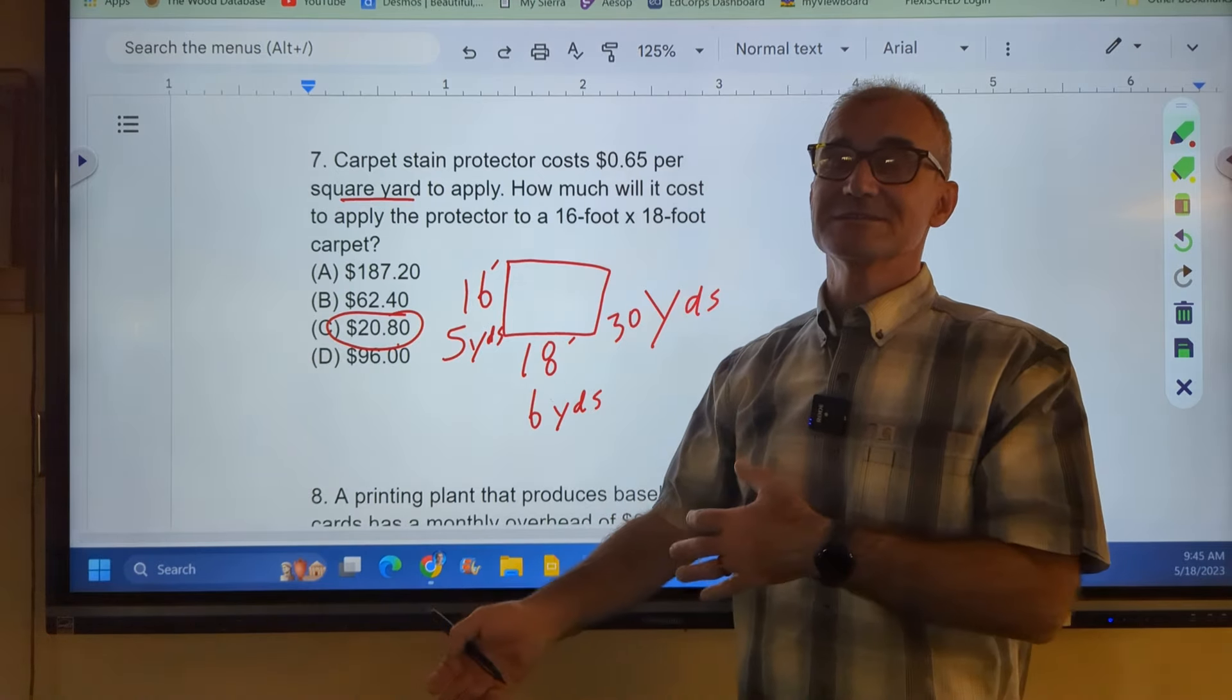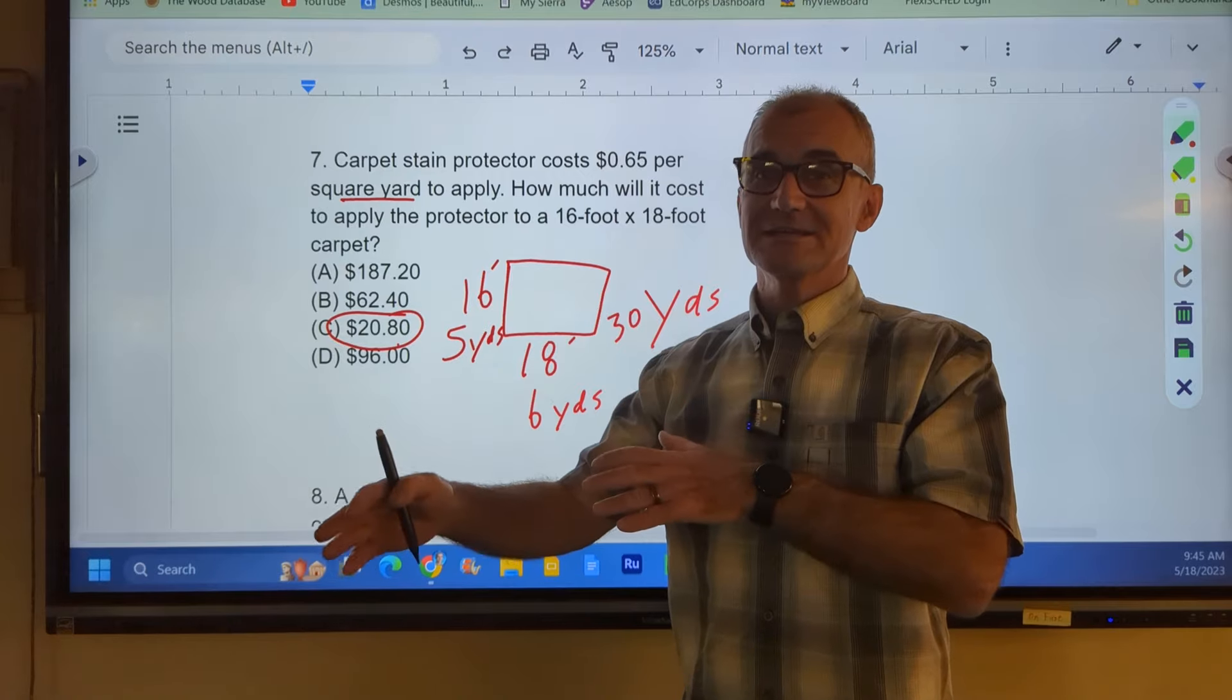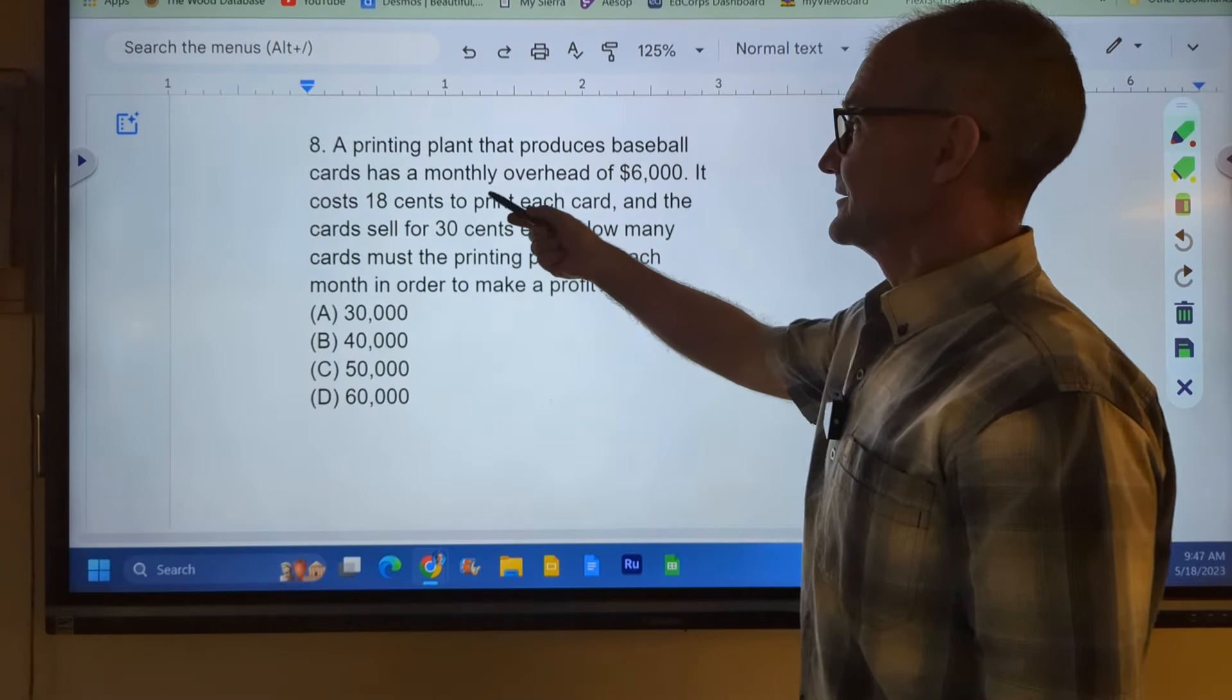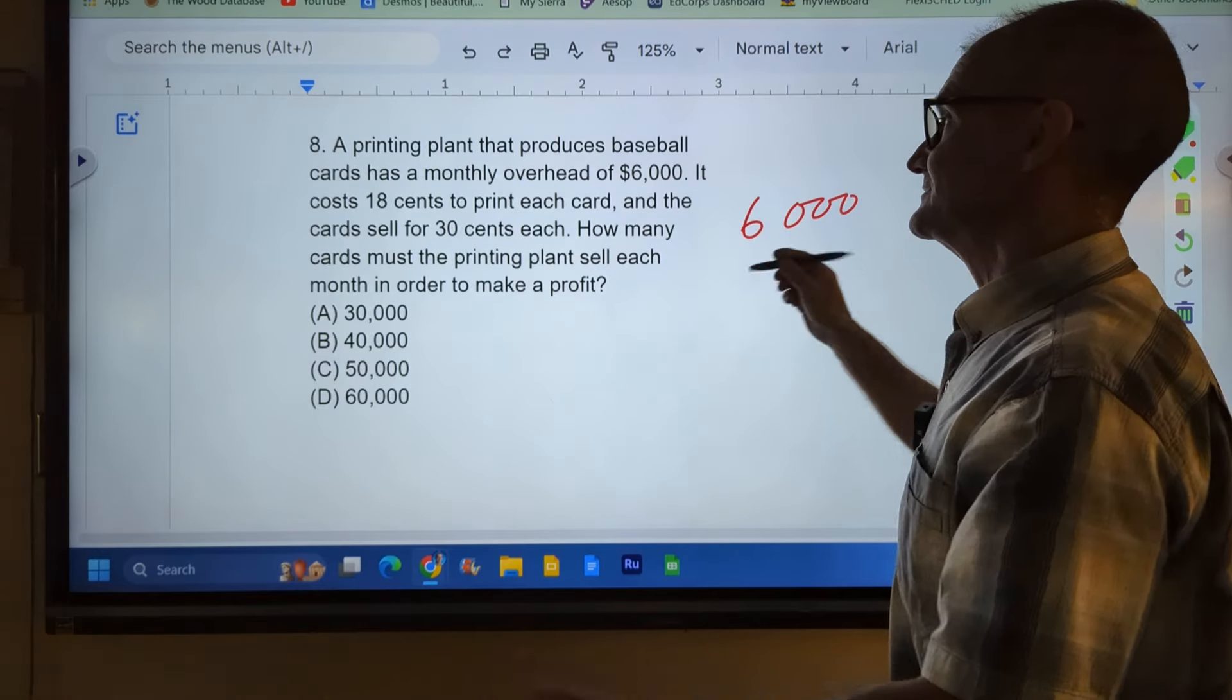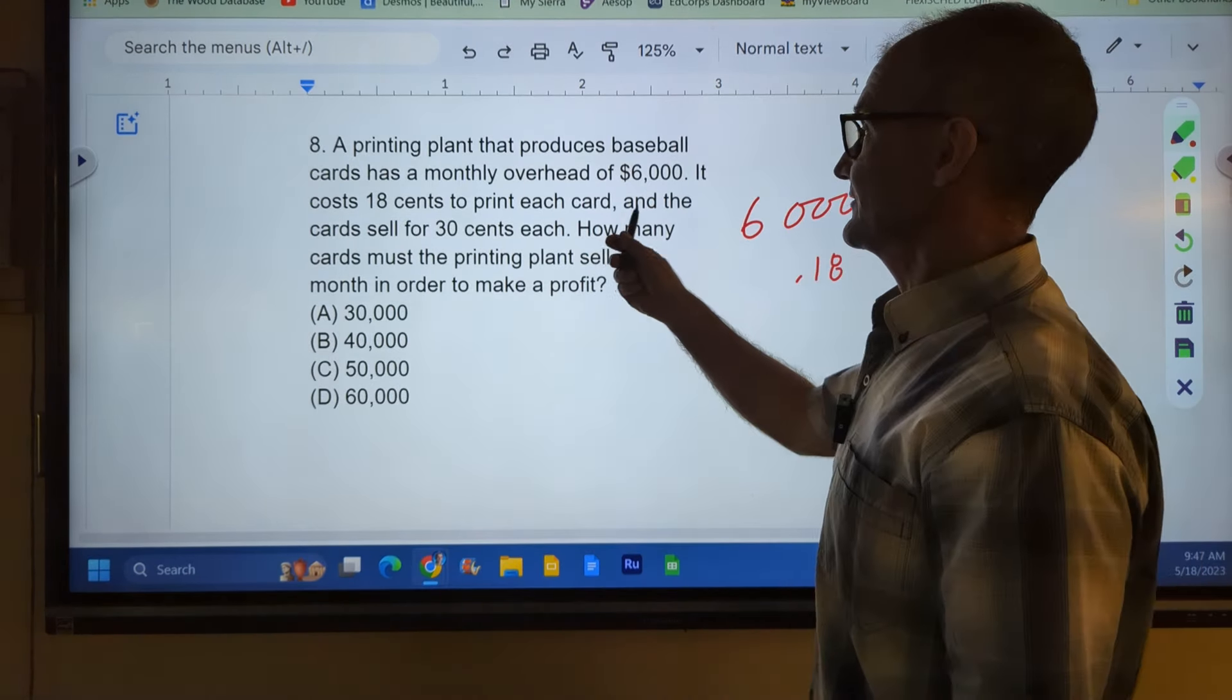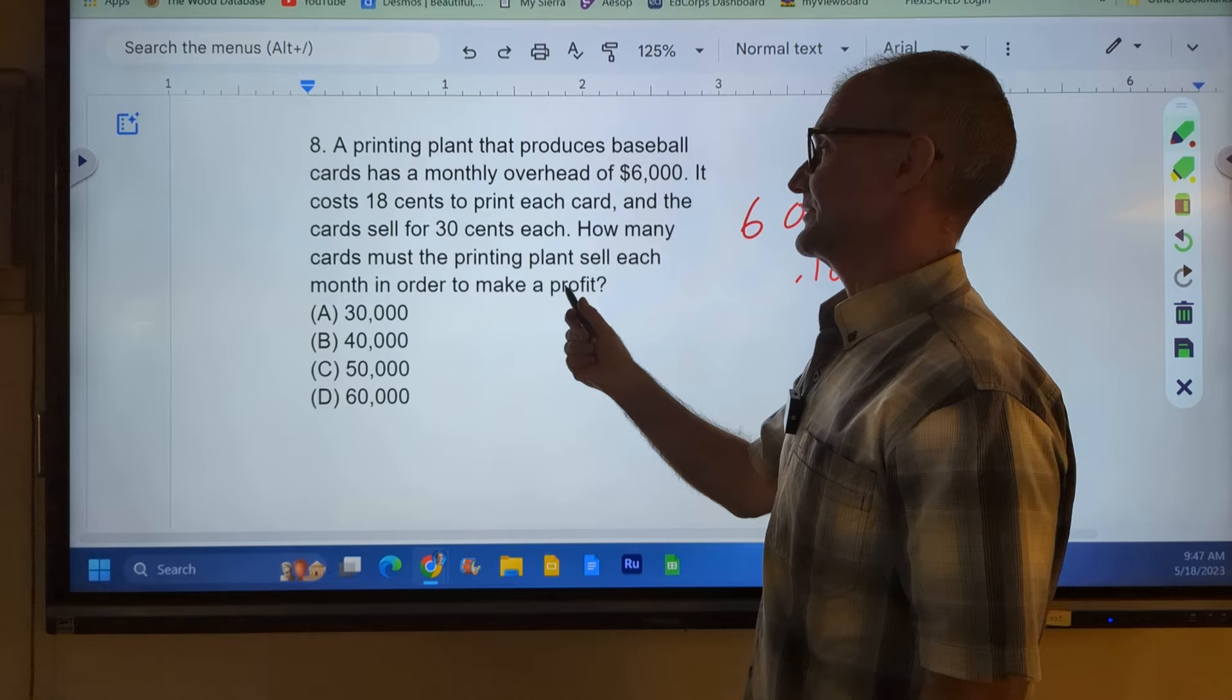So the way to get good at running those numbers in your head is you've got to do a lot of practice. So again, pause the video, do the problem, practice doing it, and then watch how I do it. Maybe you'll pick up some techniques. A printing plant that produces baseball cards has an overhead of $6,000, so whether they make one or none, it's going to cost $6,000. It costs 18 cents, so $0.18, for every card they make, and they sell for 30 cents.